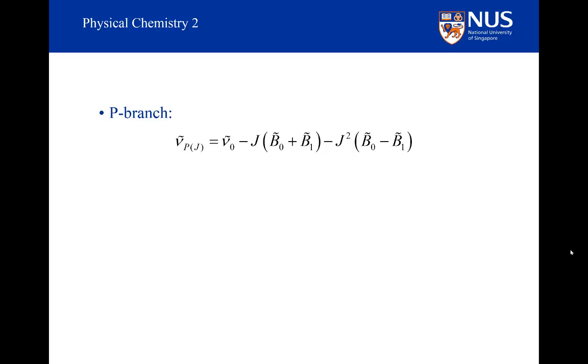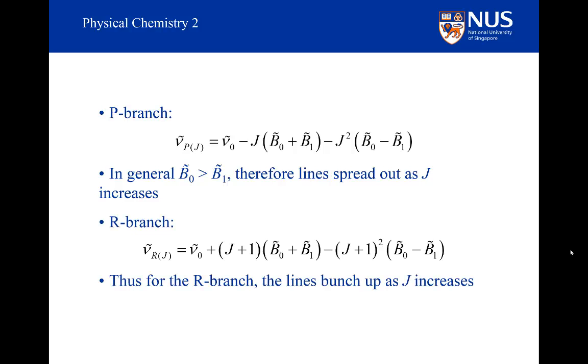The formulae can be simplified by writing J instead of J″. For the P branch, because B₀ is larger than B₁, the lines are going to get spread out as we go to higher initial J states. For the R branch, because B₀ is larger than B₁, the lines are going to get steadily closer together as we go to higher initial J states. So we get a kind of convergence in the R branch.